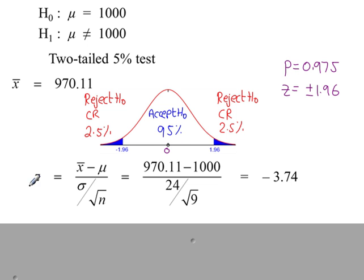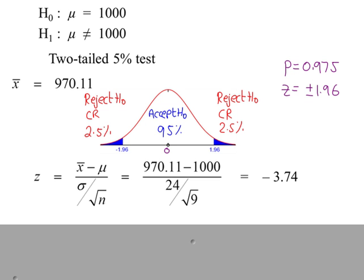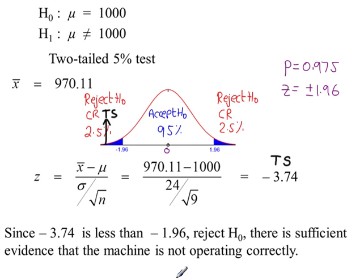Our test statistic Z is calculated using this formula, which is in the formula book on page 12. So minus 3.74 is our test statistic. We can see on our sketch that minus 3.74 is less than minus 1.96, so our test value is in the critical region and we reject H0. We can conclude, using the context of the question, that there is sufficient evidence that the machine is not operating correctly.